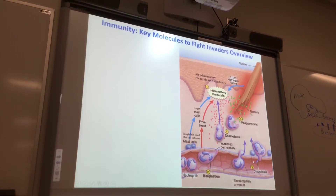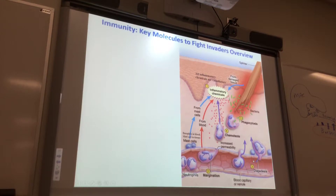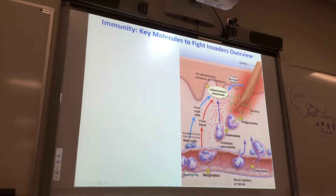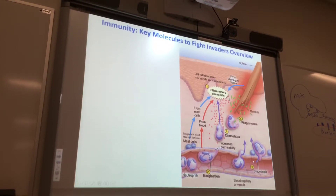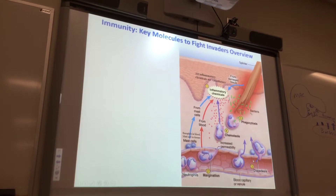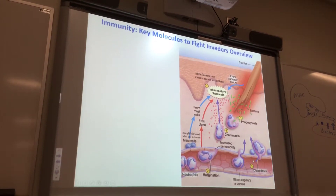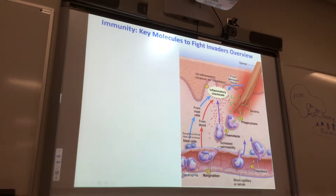Step one says inflammatory chemicals. You get inflammatory chemicals from lots of different places. The tissue — these cells that got damaged — they'll release chemicals saying they were damaged, and let's start inflammation. Have you had a splinter and seen that it got red? That's inflammation. So that's step one: inflammatory chemicals are released from a variety of cells.